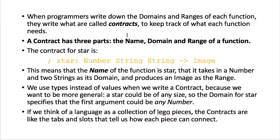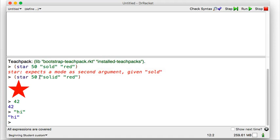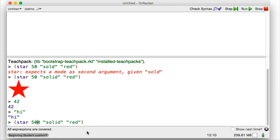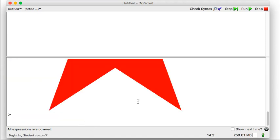So a contract has three parts, the name, the domain, and the range of a function. So here's an example of the contract for the star. It's called star, so there's its name, and then a colon. And then if we remember, let's go back and look at our star. So here's how we made a star. Let's make a bigger star. Let's make a pretty big one. Let's make it ten times bigger. Jump to the end. There's a big star.